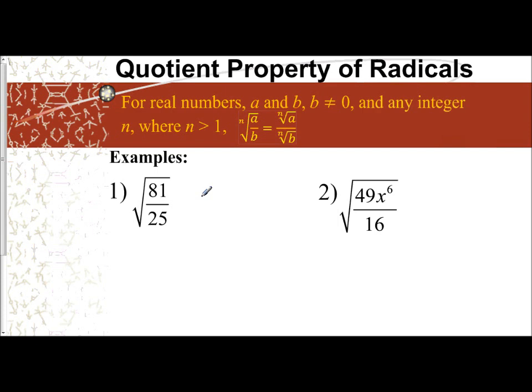In my first example I have the square root of 81 over 25. To simplify this, I can split the square root across the top, so I have the square root of 81 over the square root of 25, and then simplify them separately.